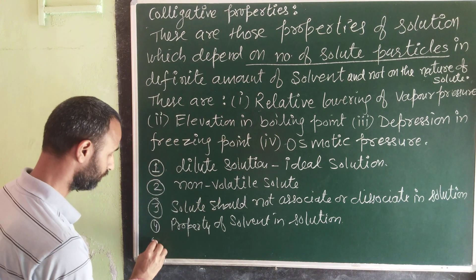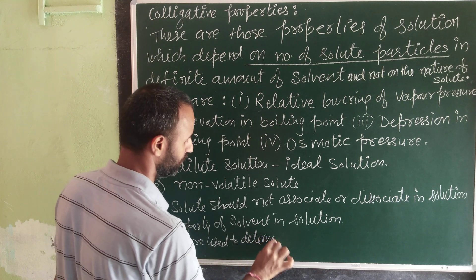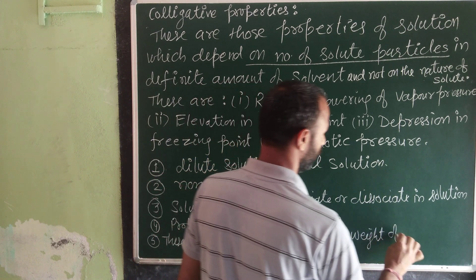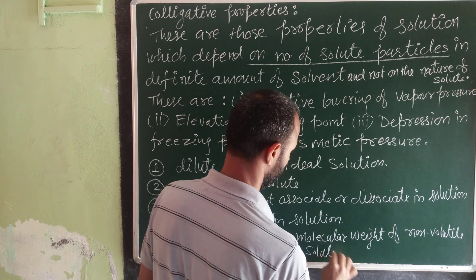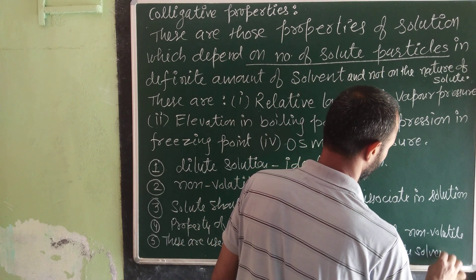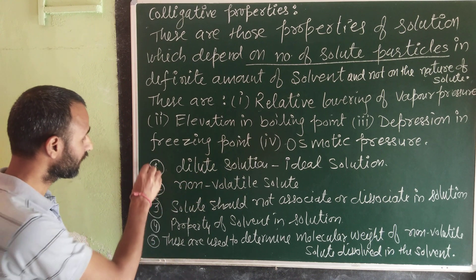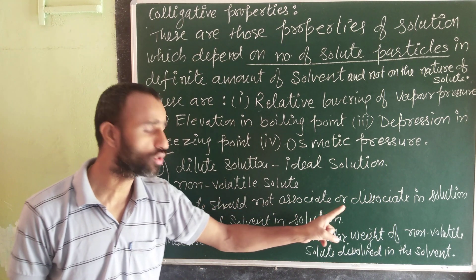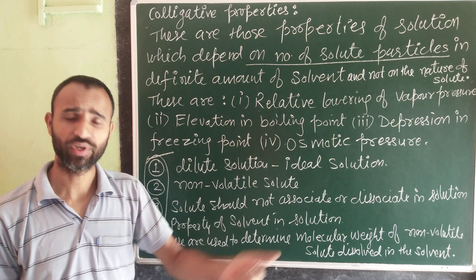These properties are used to determine the molecular weight of a non-volatile solute dissolved in a solvent. These are the conditions for applying colligative properties. If the solute associates or dissociates, there is a deviation, and we use the van't Hoff factor for correction, which we will study later.